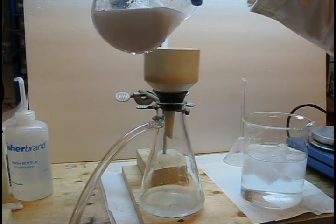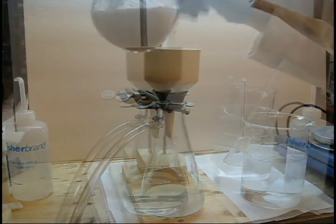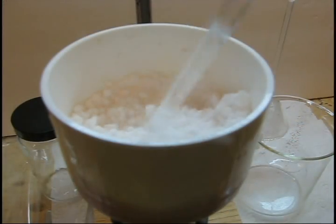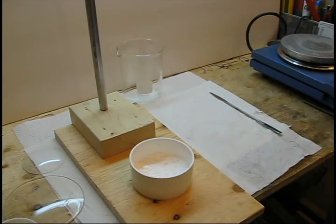Now filter the slurry by vacuum filtration until dryness, and use a spatula to break up any lumps. You will obtain a fluffy white powder that is mostly acetylsalicylic acid.